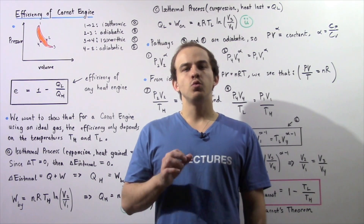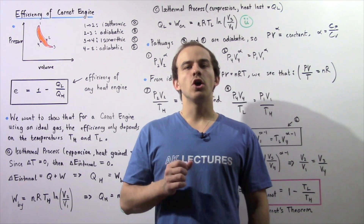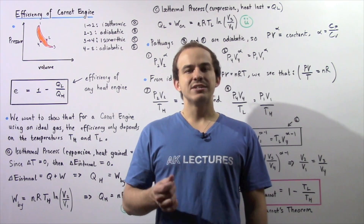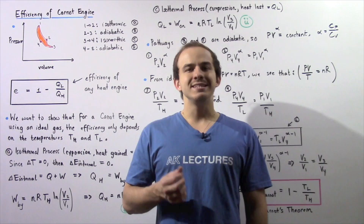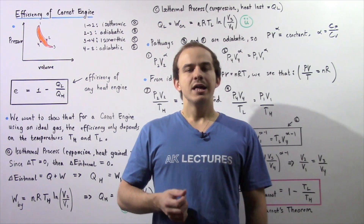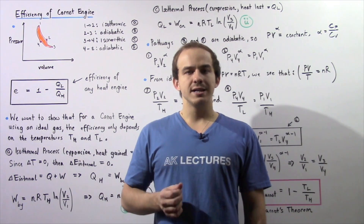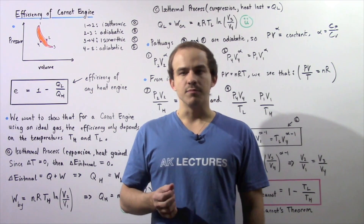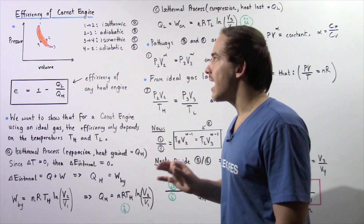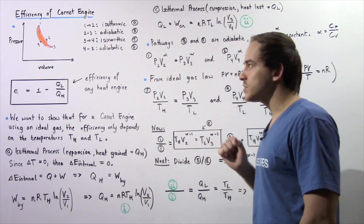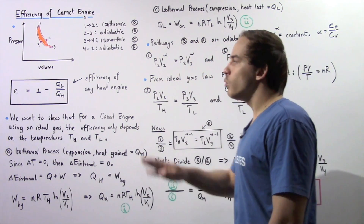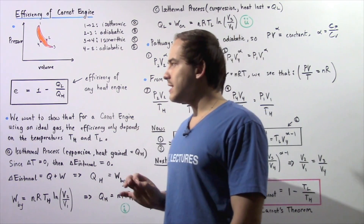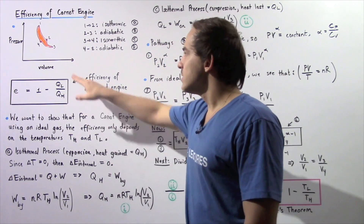In the previous lecture, we discussed Carnot's engine, which is essentially an ideal version of a heat engine that utilizes a reversible cycle. Recall that inside a Carnot cycle, we have four different processes taking place.